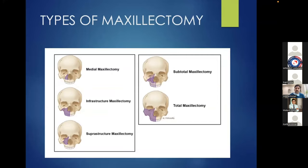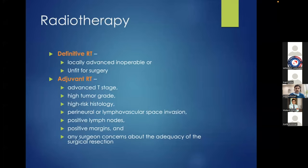For maxillectomies, different types include medial, infrastructure, superstructure, subtotal or total. Medial maxillectomies are possible endoscopically while others require open surgery. Radiotherapy as definitive therapy has a very limited role—primarily for locally advanced patients unfit for surgery. Otherwise, radiation serves as adjuvant therapy in advanced stage tumors, high-risk histology, perineural or lymphovascular involvement, positive lymph nodes, positive margins, or when surgical adequacy is doubtful.